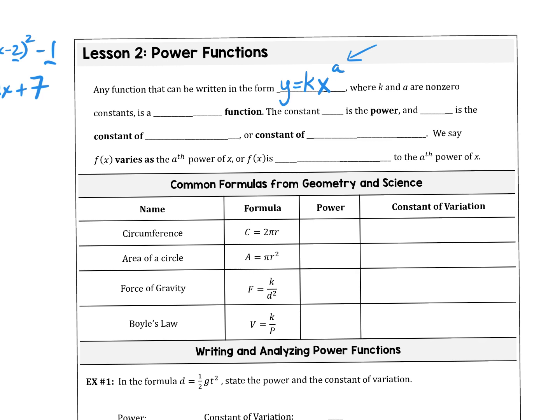If k is not zero — because if k is zero, the whole thing just goes away. And a is not zero — because if a is zero, then x just disappears, becomes 1. It is a power function. The constant a is the power, and k is the constant of proportion, or the constant of variation.